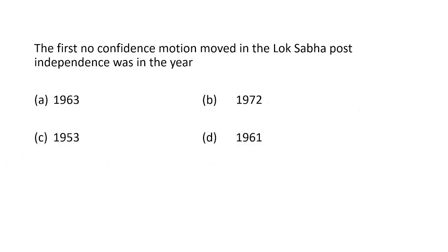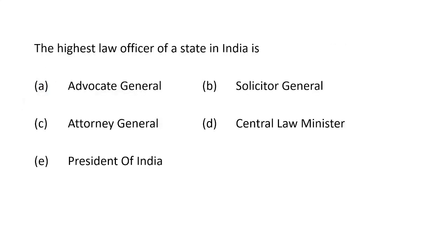The first no-confidence motion moved in Lok Sabha post-independence was in the year 1963, 1972, 1953, or 1961? The first no-confidence motion was moved in Lok Sabha in the year 1963, after the Indo-China war, by J.B. Kripalani. The highest law officer of a state in India is the Advocate General.